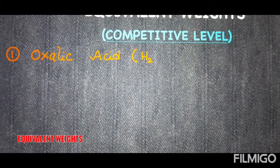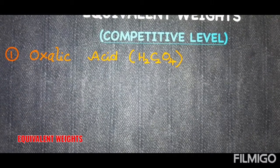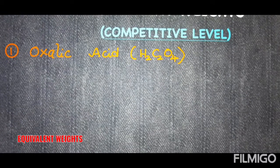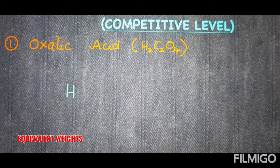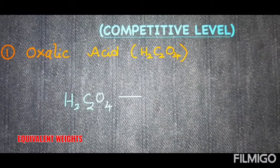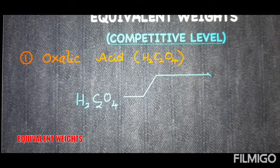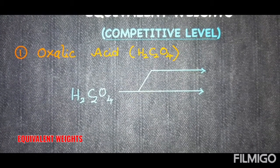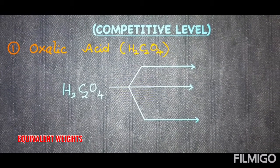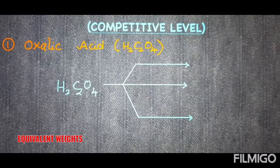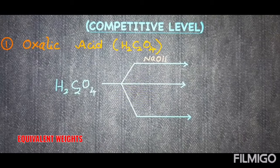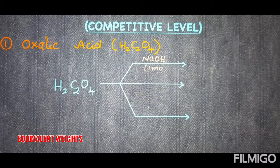Oxalic acid, H₂C₂O₄, is the formula. We will discuss in detail: if oxalic acid reacts with one mole of NaOH, two moles of NaOH, and if it undergoes a redox reaction. In the first case one mole of NaOH is taken, and in the second case two moles of NaOH are taken.